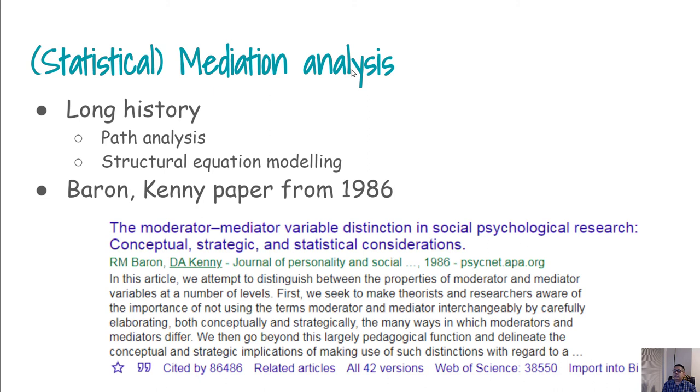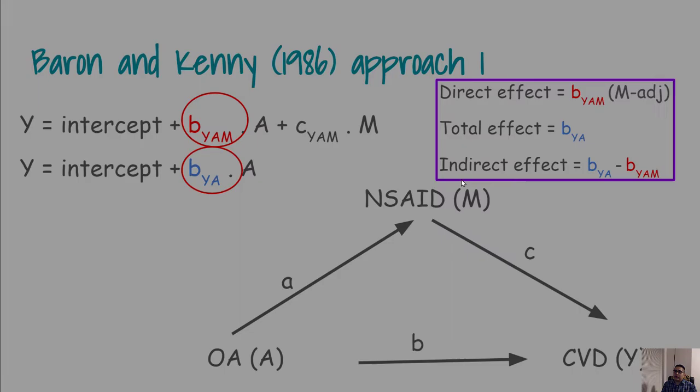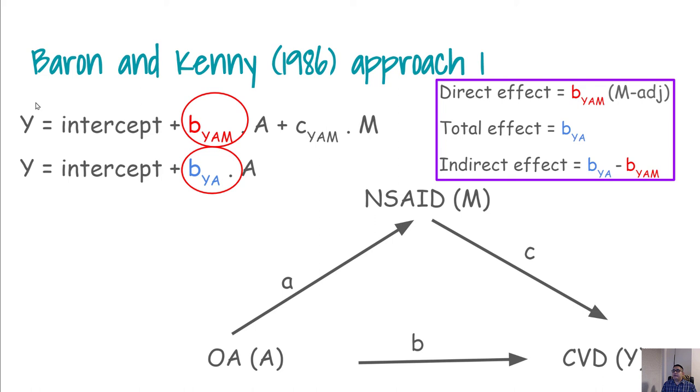What Baron and Kenny said is that if you run two different regressions where Y is your outcome, A is the exposure, and M is your mediator, so this is the first regression you are running. And you are running another regression without the mediator, and you are getting respective coefficients in each of these regressions.